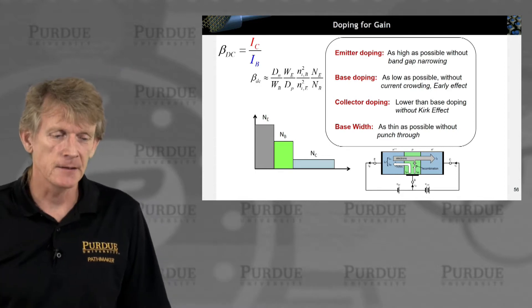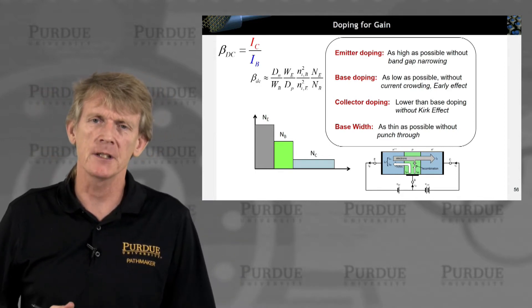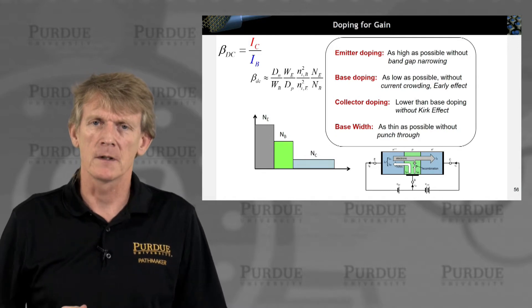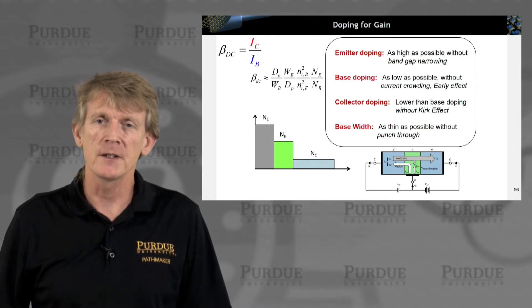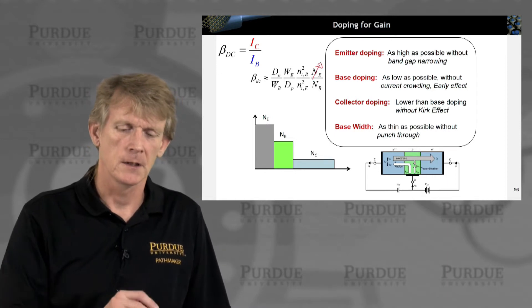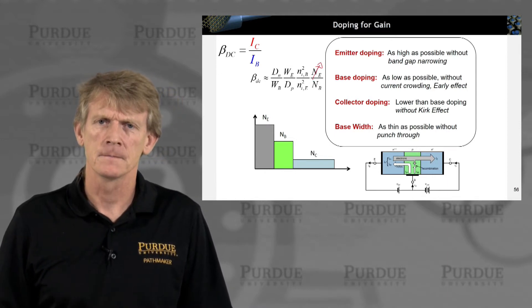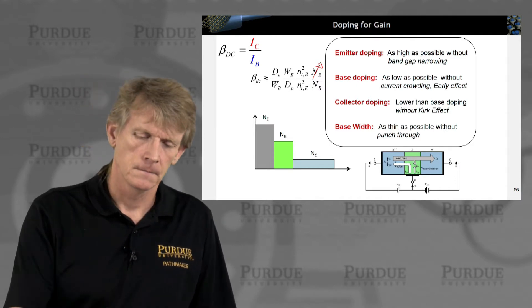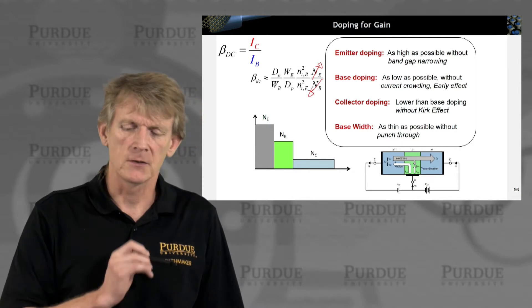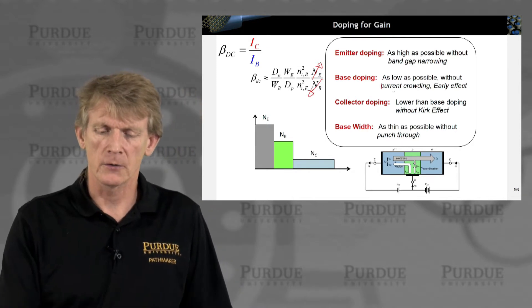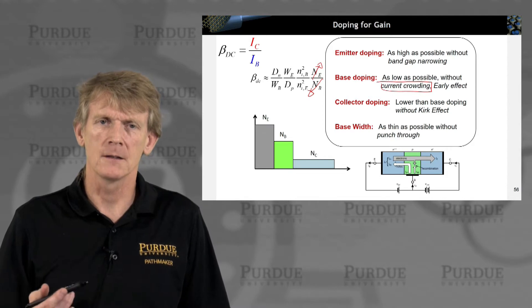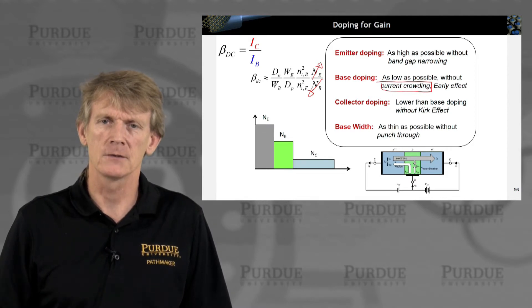In the last segment we stepped through these design concepts and they dealt with increasing emitter doping, increase emitter doping but don't get bandgap narrowing, decrease base doping without current crowding due to resistive losses.